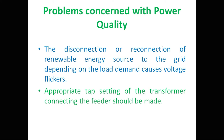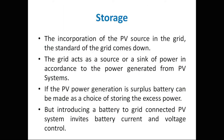The solution for voltage flicker is appropriate tap setting of the transformer connecting the feeder. By setting the transformer tap properly, we can reduce the voltage flicker. Since voltage flicker is a matter of magnitude, we can reduce or increase it using transformers. So the two power quality problems are harmonics and voltage flickers.